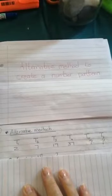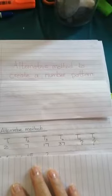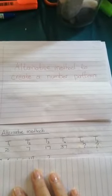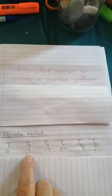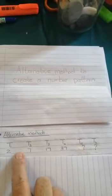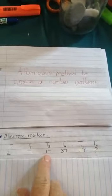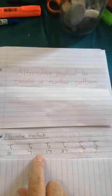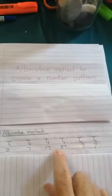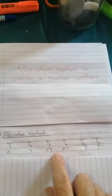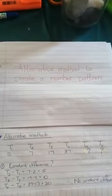First of all, we look at the methods that we already know about, like the constant difference or the constant relation. So if I look between 2 and 7, the difference is plus 5. If I look at 17 and 7, the difference is plus 10. From 17 to 37, it's plus 20. So that means there's no constant difference that I can spot immediately.